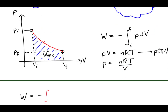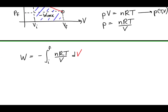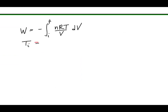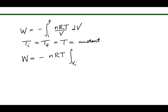Applying this to the integral for work, we have: work is equal to the negative of the integral of nRT over V dV. This is an isothermal process, so the temperature during this process is constant. Since temperature is constant, we can rewrite the work done on the gas by pulling the constants outside of the integral, leaving the integrand as dV over V.